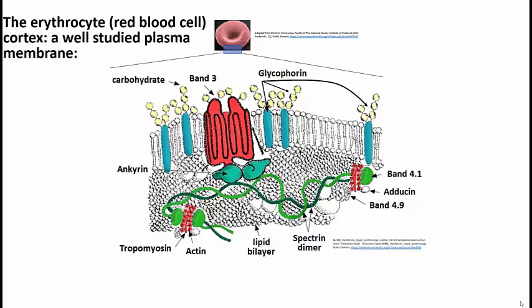The red blood cell has a very unique shape. It is this squashed, bagel-like shape, for lack of a better word. Spectrin, which is the twisted polypeptide — it's actually two polypeptides in a helical dimer — running here and there on the inner surface of the red blood cell membrane.